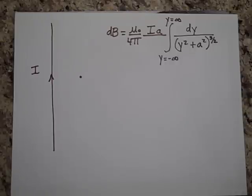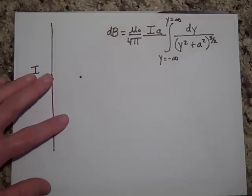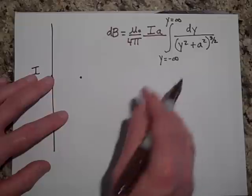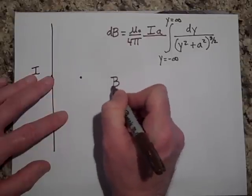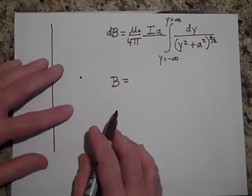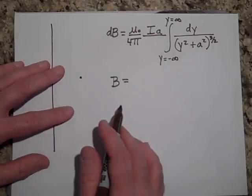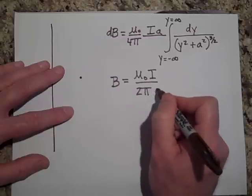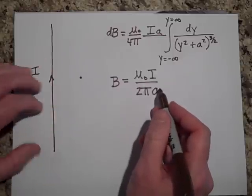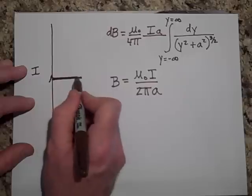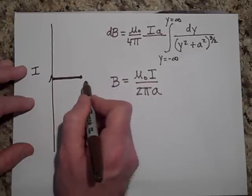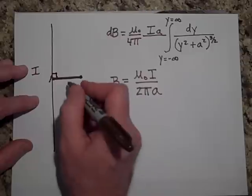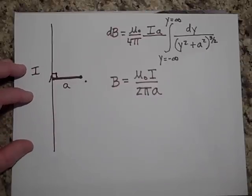I'm not going to solve this integral, but if you went to a table of integrals or plugged it into your calculator it could tell you the answer. Normal integration by substitution doesn't get this done, but trigonometric substitution does, and you get μ₀I over 2πa — where a is just the perpendicular distance from the point to the wire.